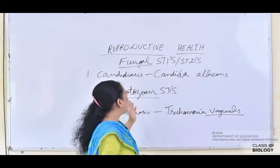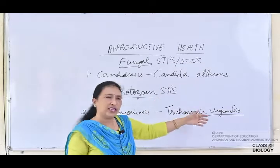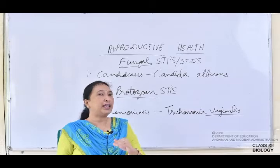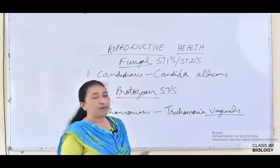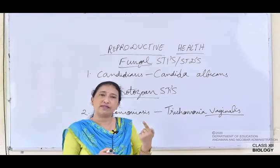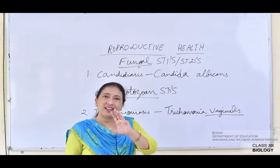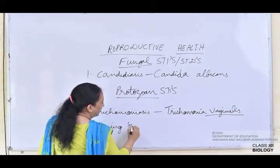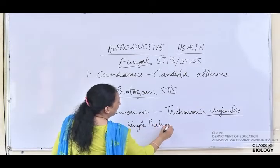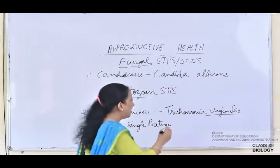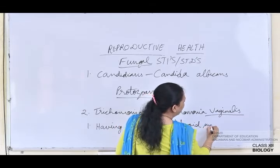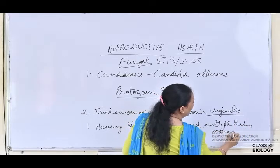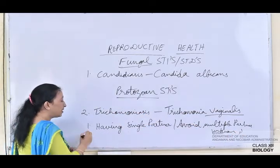The incubation period for trichomoniasis is 1 to 2 weeks — about 10 to 12 days. If antibiotics and medicines are taken on time, it can be easily treated. The reasons for all reproductive tract infections, whether caused by bacteria, virus, fungus, or protozoa, relate to three key things: first, having a single partner — coitus should take place with only a single partner, avoiding multiple or unknown partners.